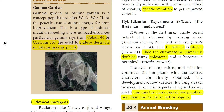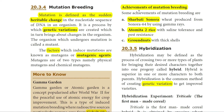Gamma rays from cobalt-60 are used to induce desirable mutations in crop plants. Achievements of mutation breeding include: Sharbati Sonora wheat, produced from Sonora 64 using gamma rays; Atomita 2 rice, which can grow in salty soil (saline tolerance) and is pest resistant, produced through mutation; and groundnuts with thick shells, also produced through mutation breeding.